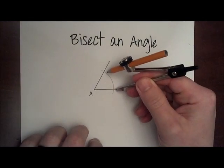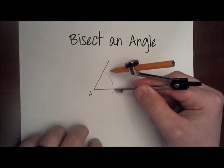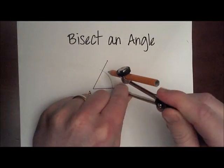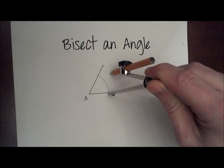Now, normally when we measure the fatness, we measure the distance between these two points of intersection. We just need to make sure our compass is open more than half of that distance, and we're going to rotate out into the interior of the angle and make an X.